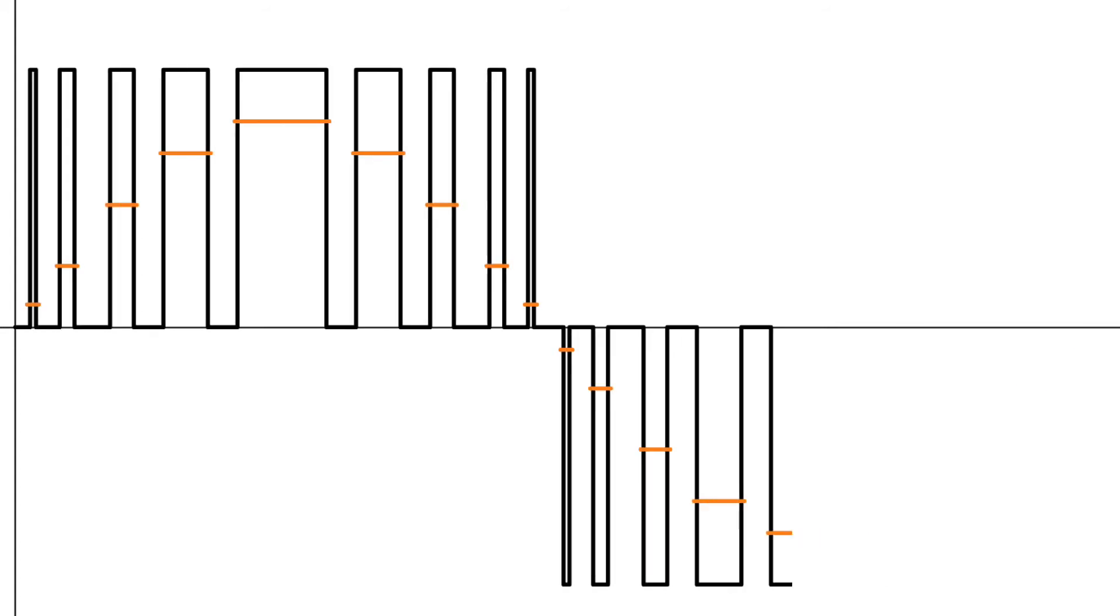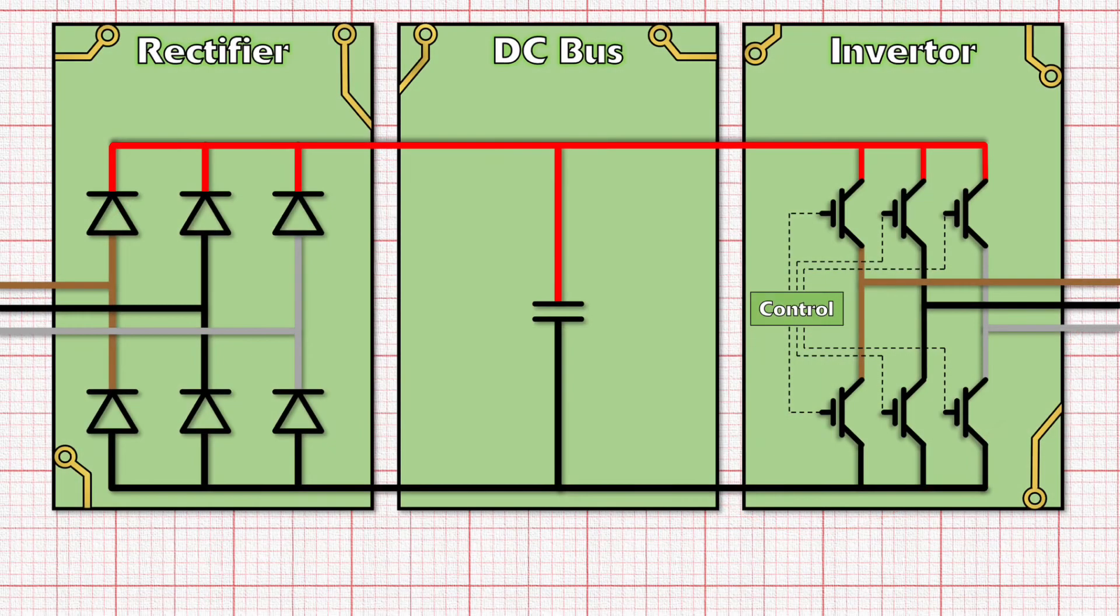These different pulses of current have different average values because of the time they're on for, which means that by looking at those average values, the output waveform of the electricity starts to look increasingly like the nice smooth AC waveform that we're used to. And so finally the mystery is solved. By varying the timing that the tiny switches are turning on and off at, we can start to change the frequency of the output waveform.